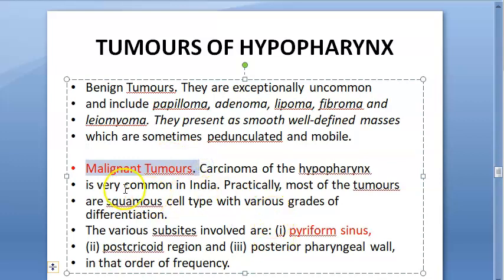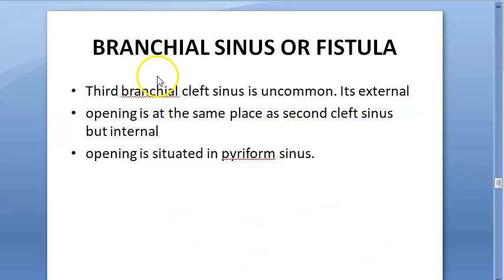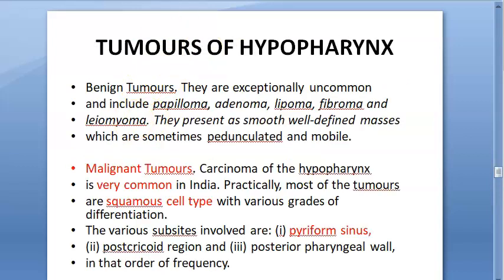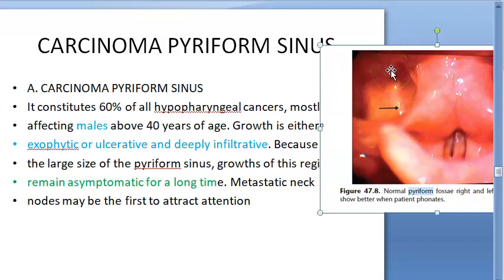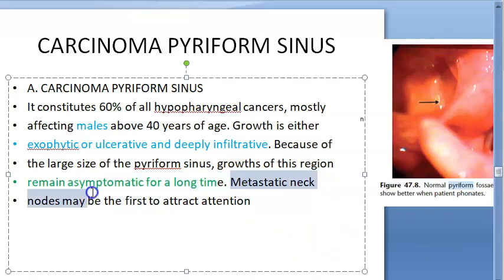In tumors of the hypopharynx, the most common malignant tumor involves the pyriform sinus, and most tumors are of squamous cell type. Among all hypopharynx sites — pyriform sinus, post-cricoid, and posterior pharyngeal wall — the pyriform sinus is most commonly affected. This carcinoma occurs more commonly in males. It can be exophytic or ulcerative and deeply infiltrative. Because there is enough space for it to grow, it can remain asymptomatic for a long time, and metastatic neck nodes may be the first finding.